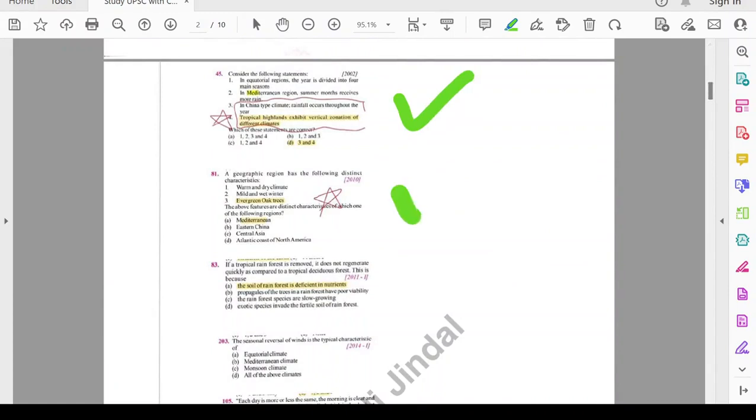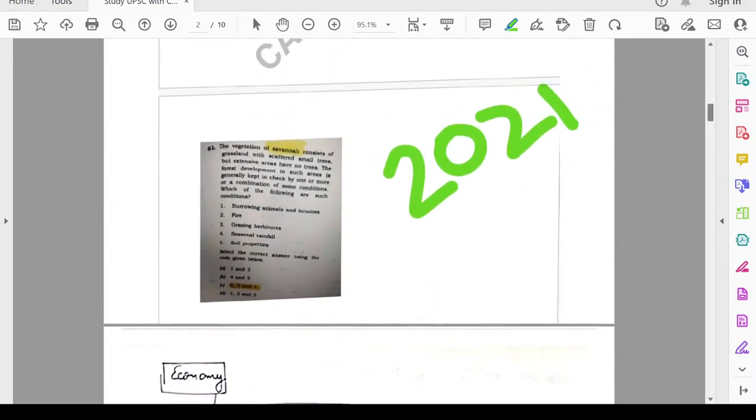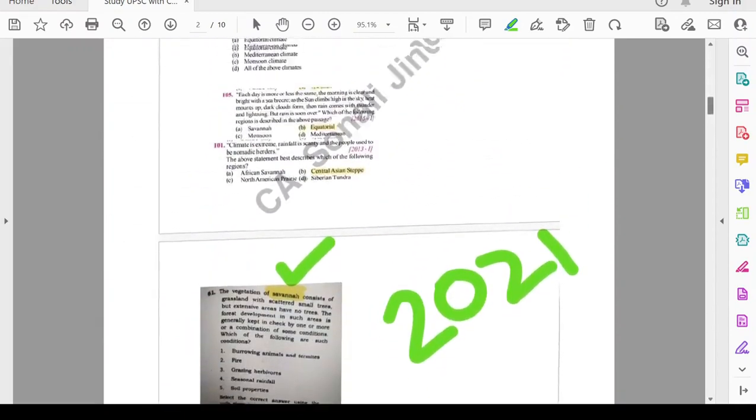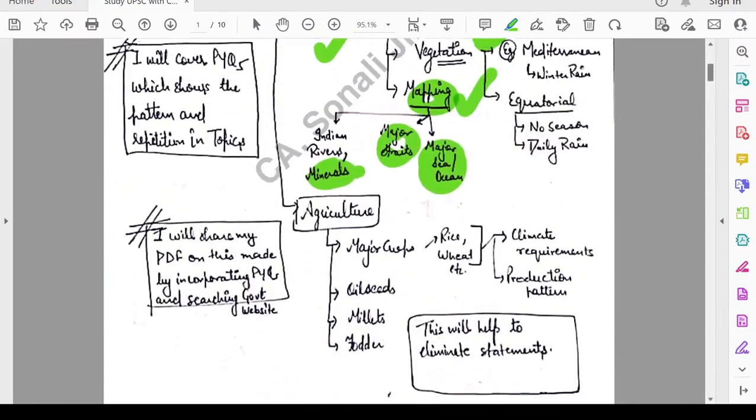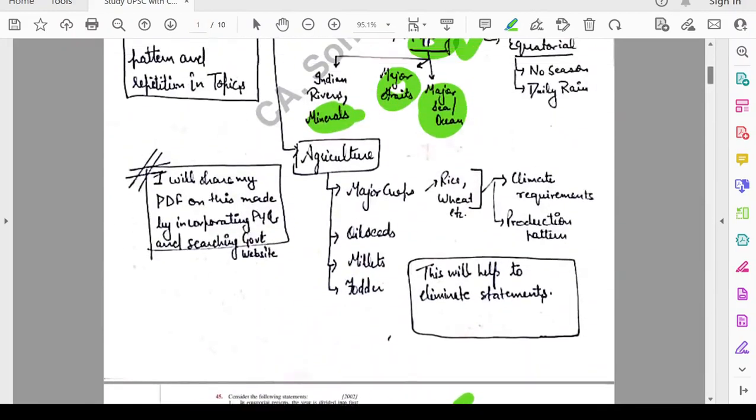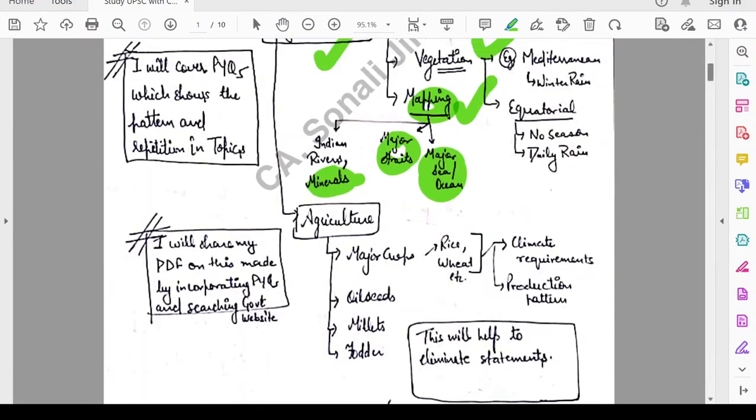In 2002, then in 2010, 2011, 2014, 15, 13 and in 2021 as well. Here UPSC has asked about the savannah vegetation. Like you can see how repeatedly UPSC has asked on this topic. So, you need to focus on this topic very sincerely.